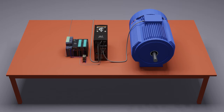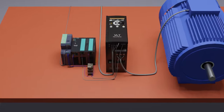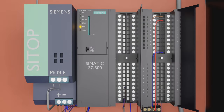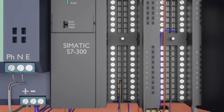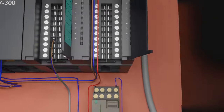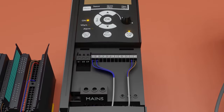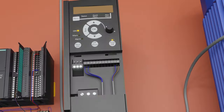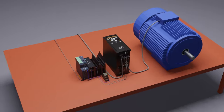Welcome to another training session on PLC programming. In today's tutorial video, we will learn how we can program an analog output in the PLC, and how we can connect this analog output signal with the VFD as a speed reference signal, so that using this analog output signal we can control the speed or RPM of the motor.